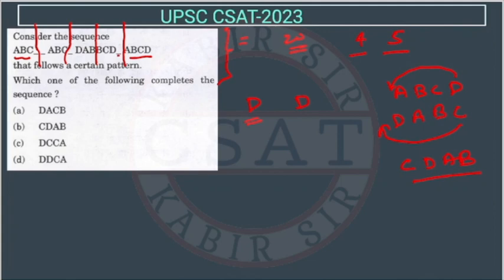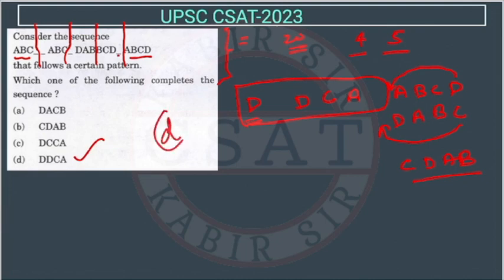Otherwise, in each group we will get a, b, c, d. So as you can see, in the first one we are getting a, b, c — d is missing. In this one we are getting a, b, c — again d is missing. And in this one we are getting a, b, d — so c is missing. In the fourth one we are getting b, c, d — so a is missing. So this will be the answer. Just check — this is matching with D, so the answer will be option D.